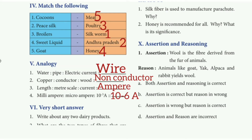Match the following. First one: cocoons — the answer is silkworm. Second one: Pea silk — the answer is Andhra Pradesh. Third one: broilers — the answer is poultry. Fourth one: sweet liquid — the answer is honey. Fifth one: food — the answer is meat.